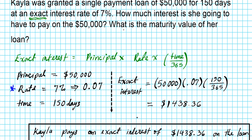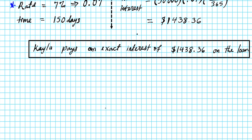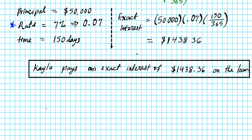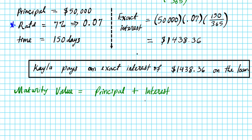In the second part, we're asked to find the maturity value of her loan. Do you recall the formula for computing the maturity value? Let's write it down first and then apply it to this scenario. The maturity value is given by the principal — the amount of money Kayla borrowed — plus the interest, which in this case is the exact interest.